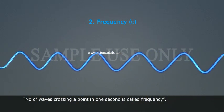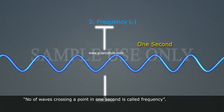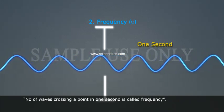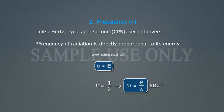Frequency (Nu): Number of waves crossing a point in one second is called frequency. Units: Hertz, cycles per second (CPS), second inverse. Frequency of radiation is directly proportional to its energy: Nu is directly proportional to E, indirectly proportional to one by lambda. This gives nu equals E by lambda, second inverse.